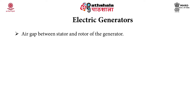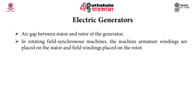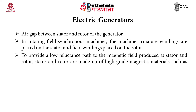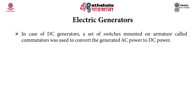There is an air gap between the stator and rotor of the generator. In rotating field synchronous machines, the armature windings are placed on the stator and field windings on the rotor. To provide a low reluctance path to the magnetic field, stator and rotor are made of high-grade magnetic material such as silicon steel. A brush assembly or slip rings are required to take out the generated power from the rotor. In DC generators, commutators mounted on the armature are used to convert generated AC power to DC power.